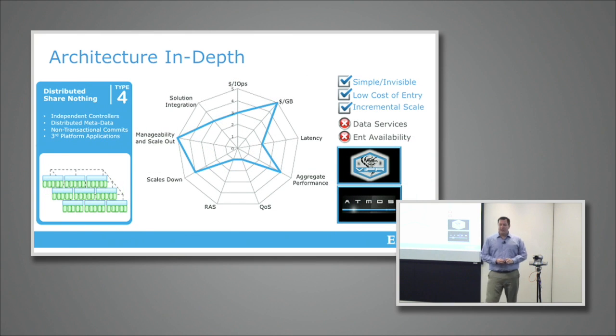The final one is the Type 4, the distributed shared nothing. This is really where I've got large numbers of nodes that create a very simple persistence layer that data can be written down to. But it's not necessarily going to take care of the backend resiliency and redundancy. This is where Viper data services, object, HDFS, and eventually we'll be adding block and file to this as well, and Atmos falls into this category.